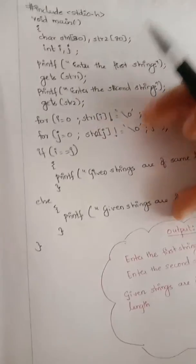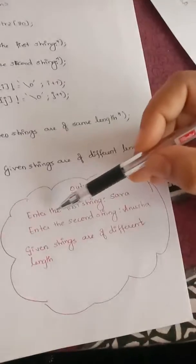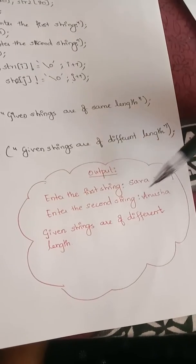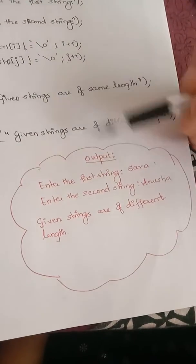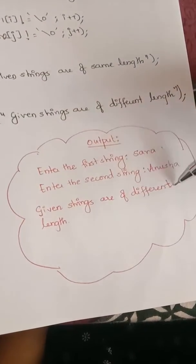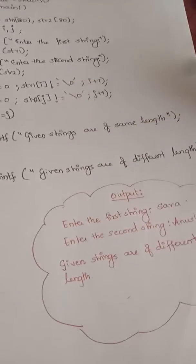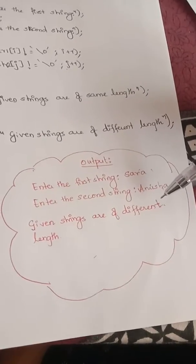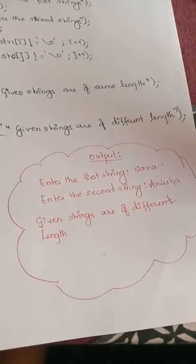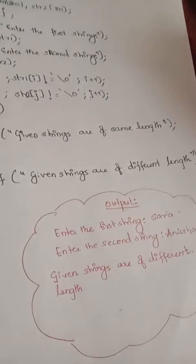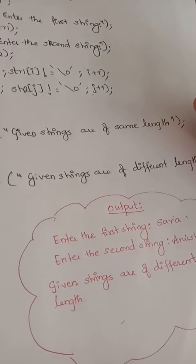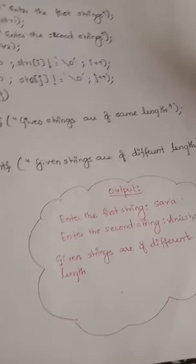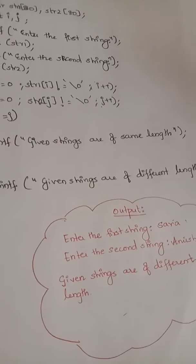This is how you compare the length of two strings. Let us see how the output looks. For the first string I have written 'Sara' and for the second string 'Anusha', so the output will be 'given strings are of different length'. If, for example, the first string is 'Anu' and the second string is 'Psi', the output would be 'given strings are of same length'. Hope you have understood — please go through the basic logic of the program. Any doubts, feel free to contact me. Thank you.